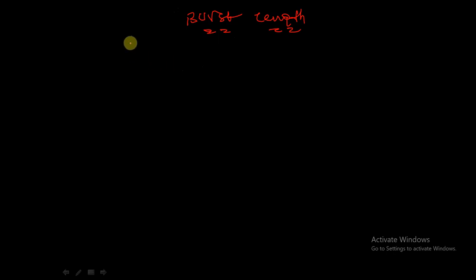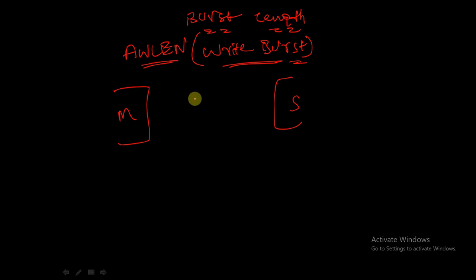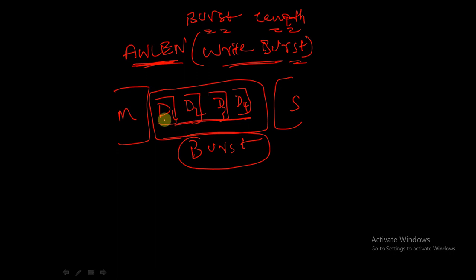Regarding burst length: AWLEN — the AW length signal for a write burst — specifies the number of data transfers within each burst initiated by the master for a write operation. In a write operation when the master sends data items in the form of a burst, say a burst containing D1, D2, D3, D4, AW length specifies how many data items are present in that burst — in this case four.